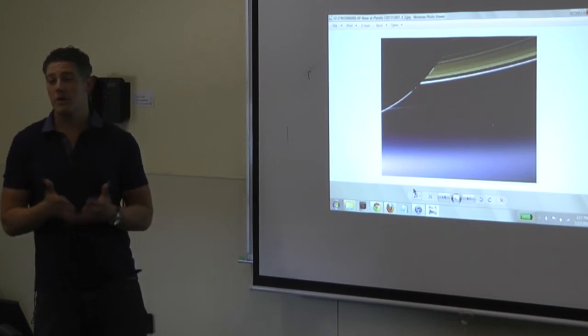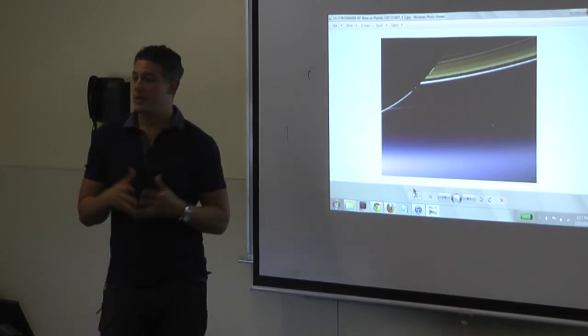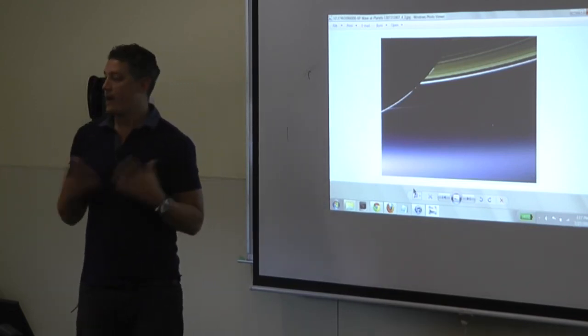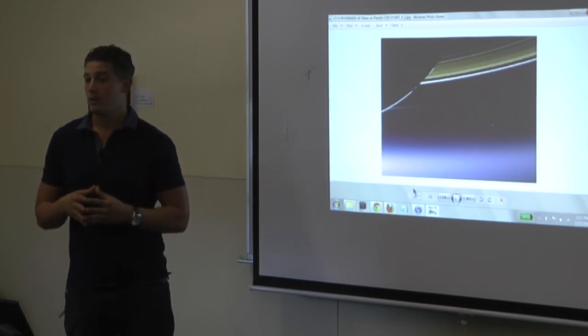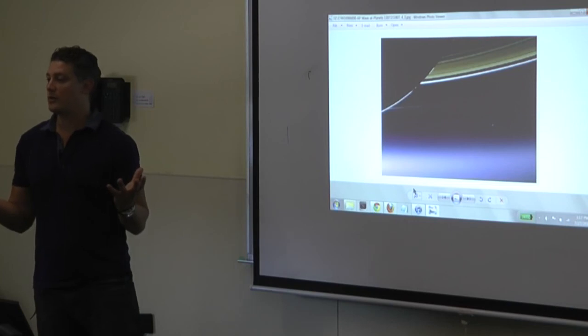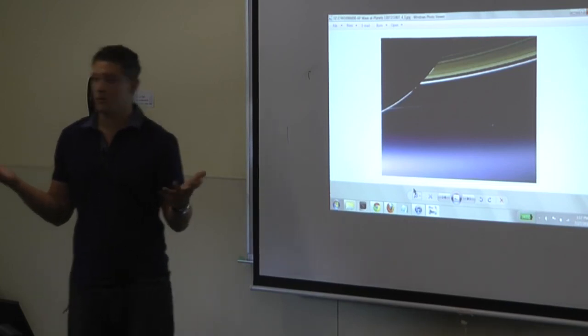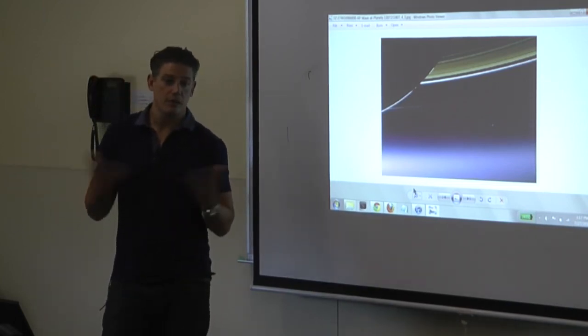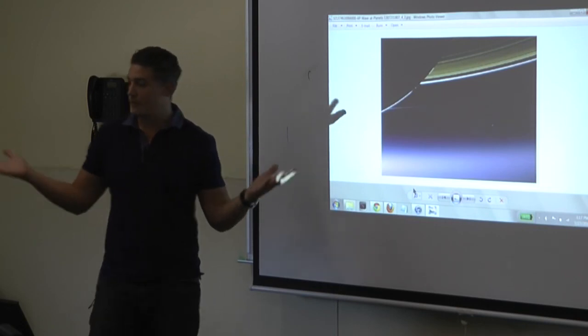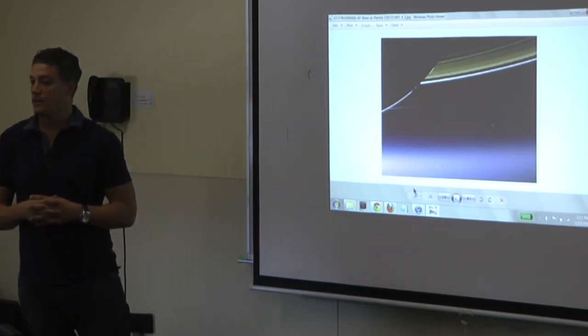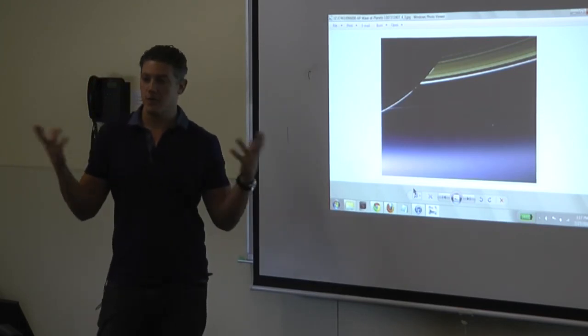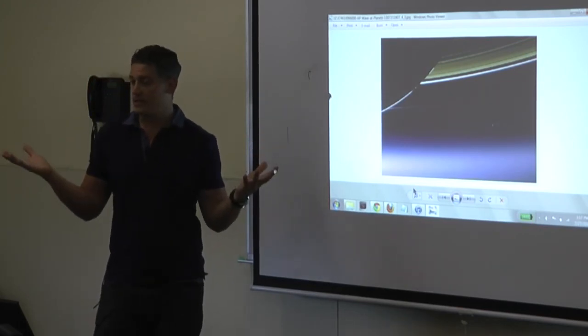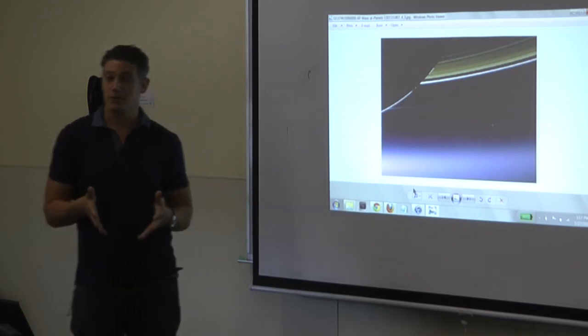Now each of those stars, maybe not every single one, but most of them, they've now been able to determine have some type of planetary system associated with them. So 300 billion stars, each possibly with its own planetary system, with anywhere from 3, 5, 8, however many planets. Now you're starting to think possibly up into the trillions in terms of number of planets that exist just in our galaxy.